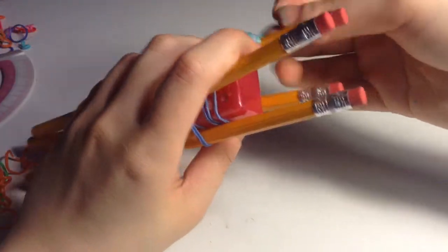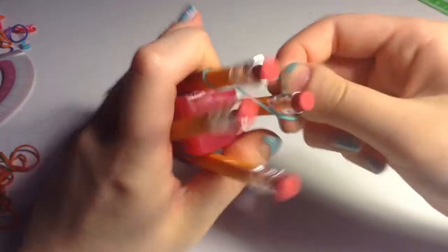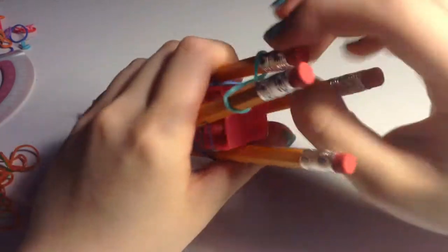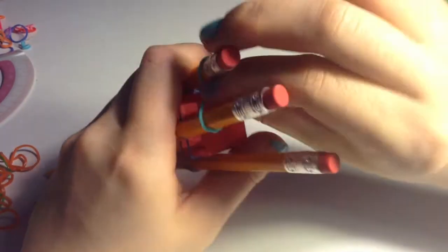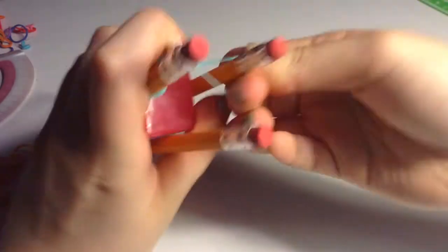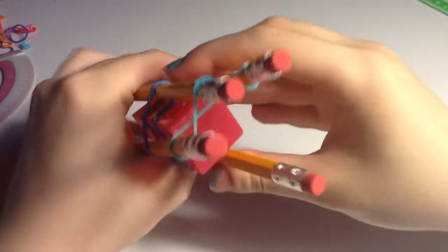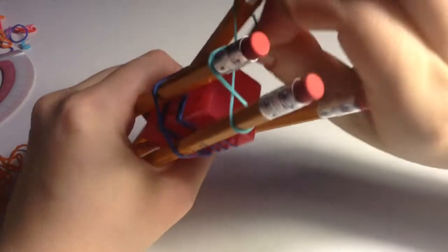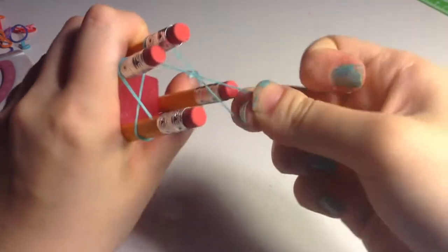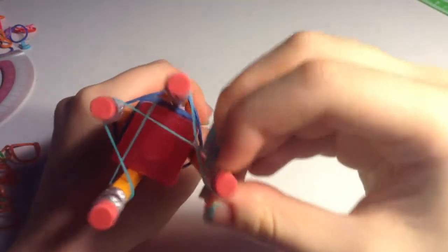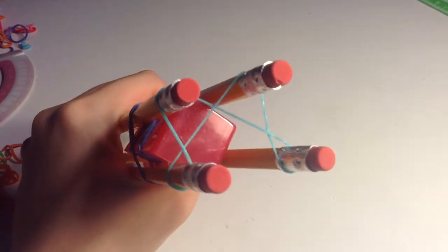You're going to take your first color rubber band, just one, and wrap it around all four of them. So you're going to do an eight on all of them. Just twist it around like that and it should construct something that kind of looks like a semi-star.